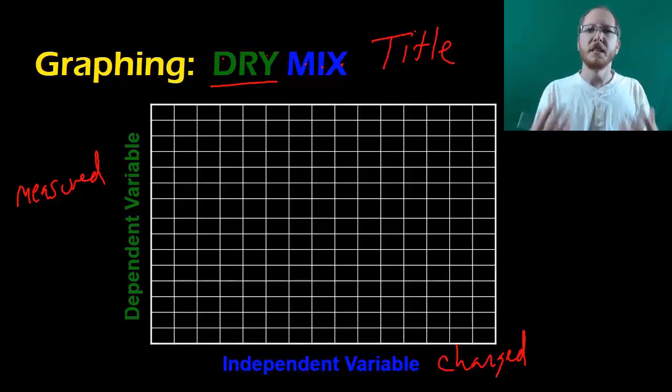If you have other books that you look to, sometimes people call the dependent variable the responding variable. That's the other reason DRYMIX is good, because dependent or responding variable goes on the y. And sometimes people call the independent variable the manipulated variable. So the manipulated or independent variable goes on the x. It's the same basic idea, it's just another name for it.